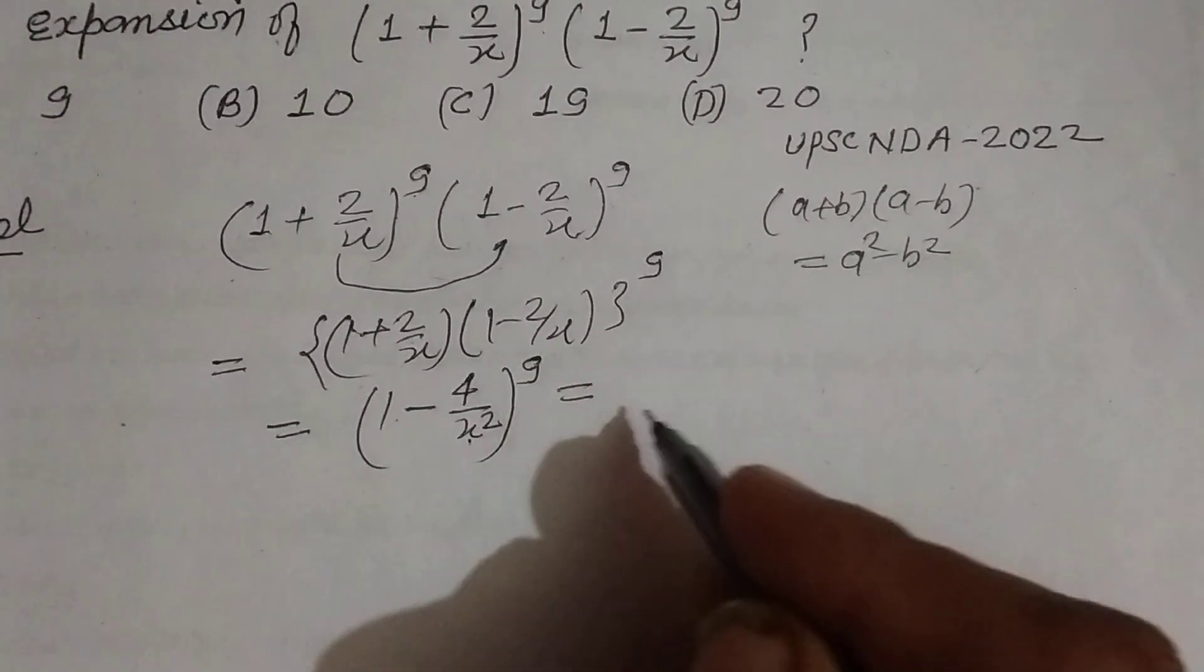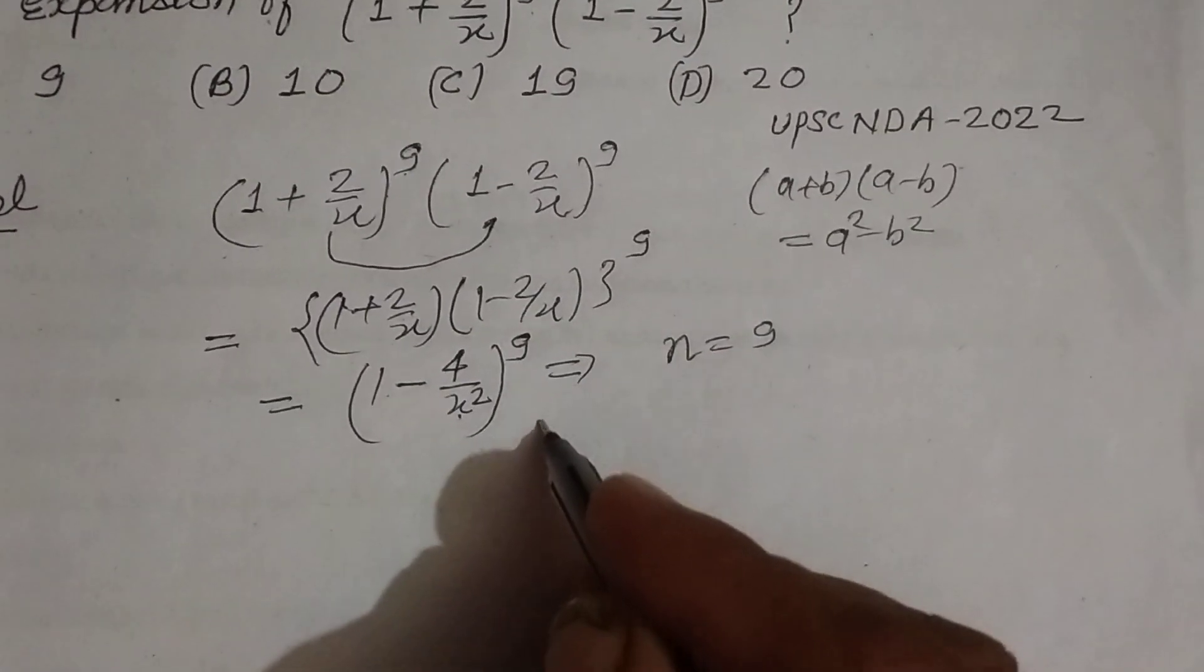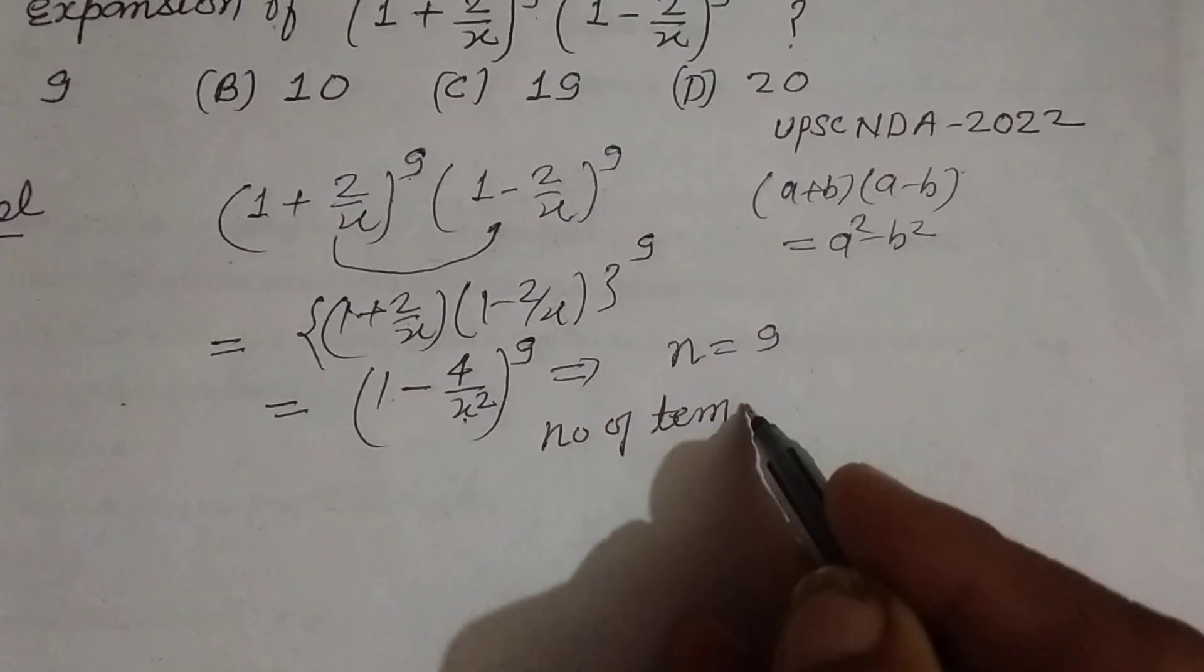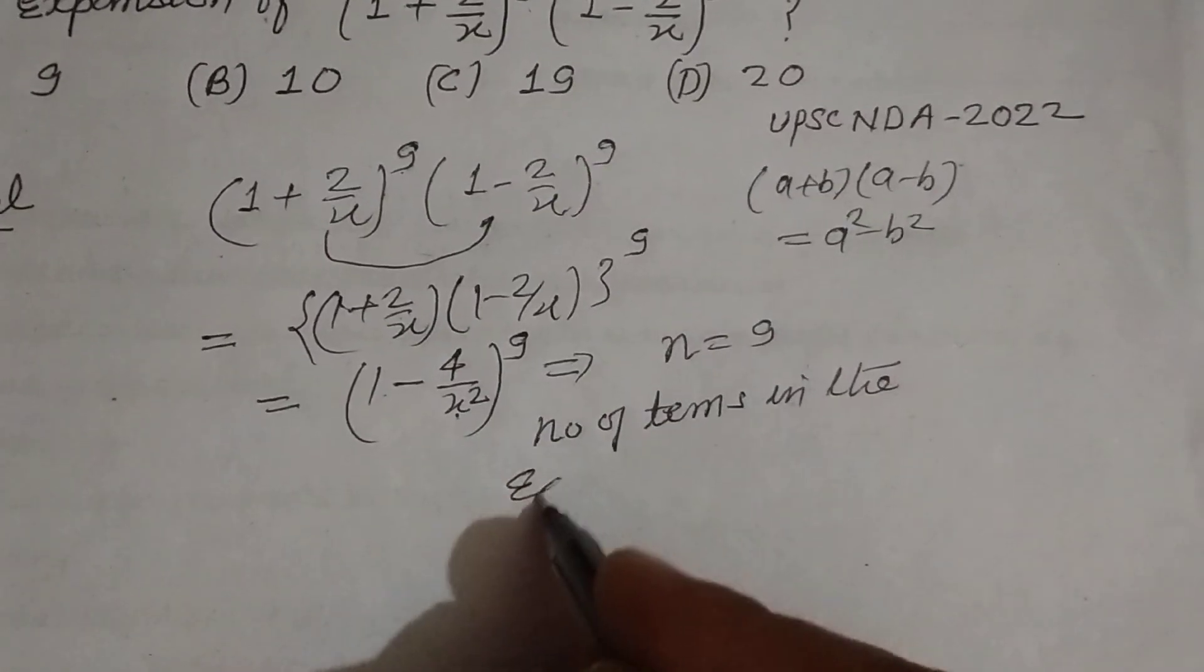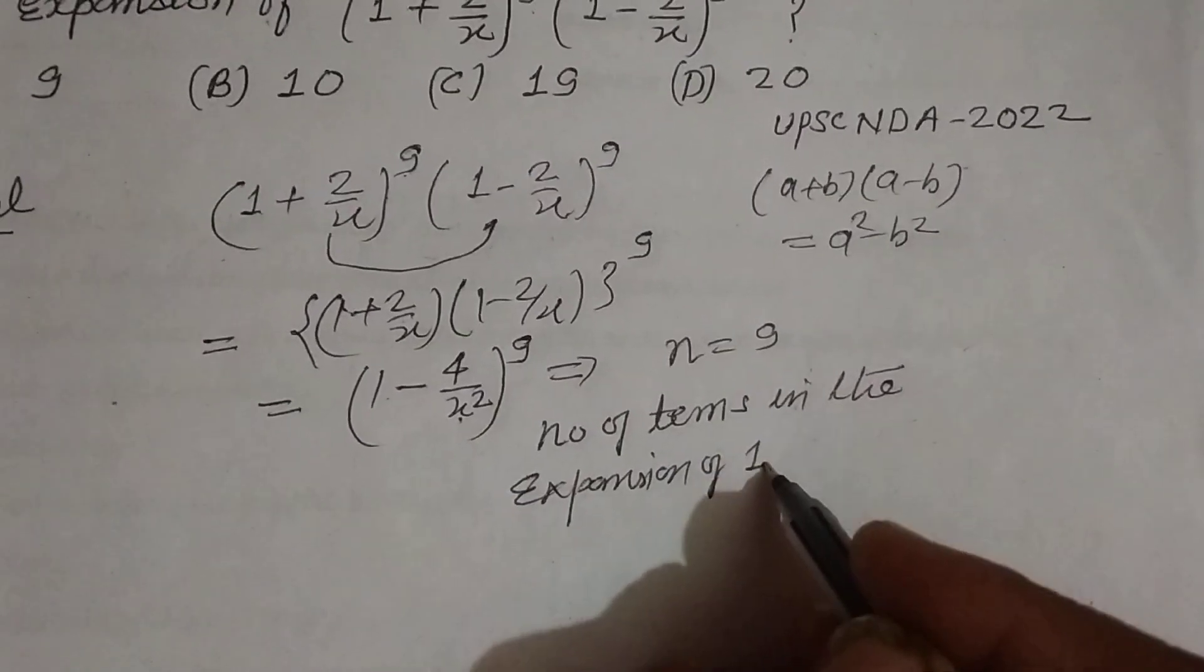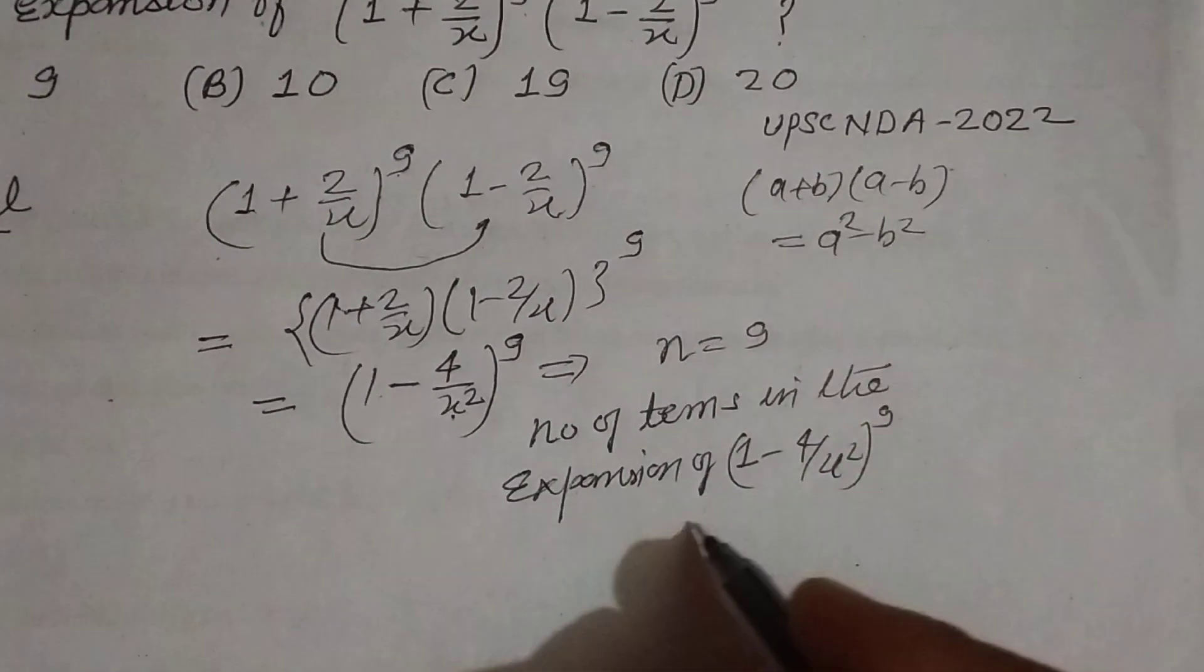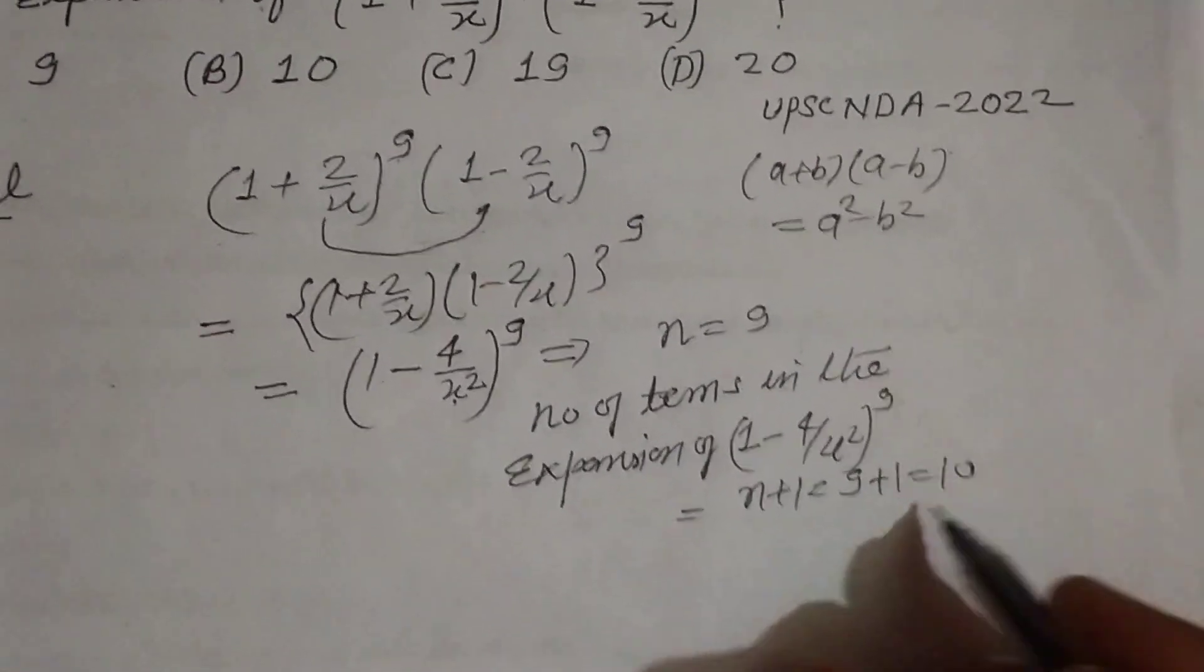Now the power n is 9, therefore the number of terms in the expansion of (1 - 4/x²)^9 is n + 1, which means 9 + 1, this is 10.